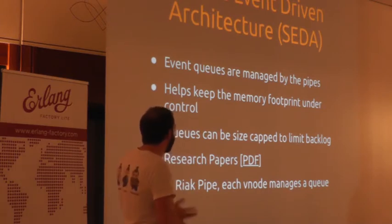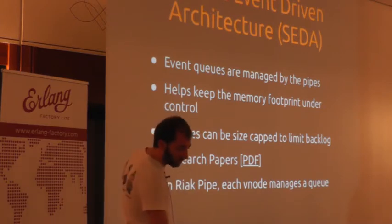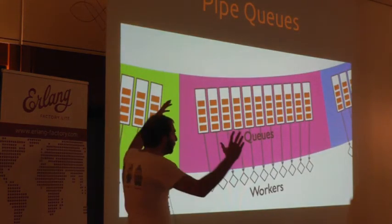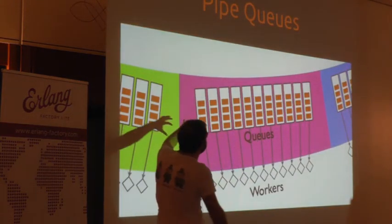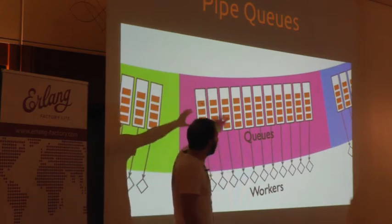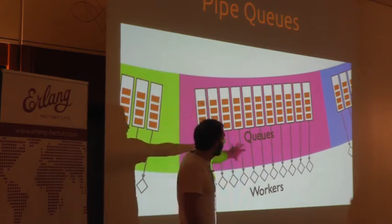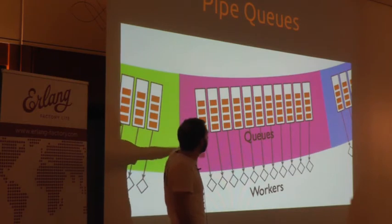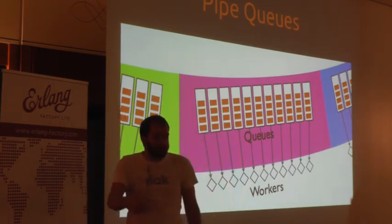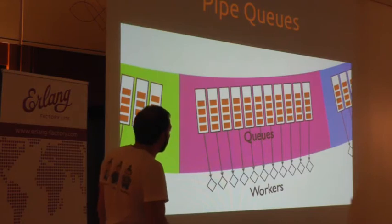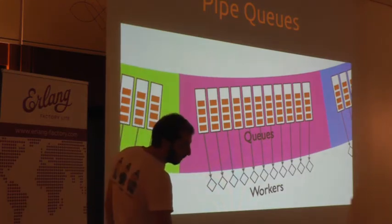In React Pipe, each V node manages a queue. Zooming in to a particular V node, there's a series of queues and the V node itself has a worker pool. Each of those worker pools pulls from one of the queues to perform the fitting function — the transformation work you want to perform.